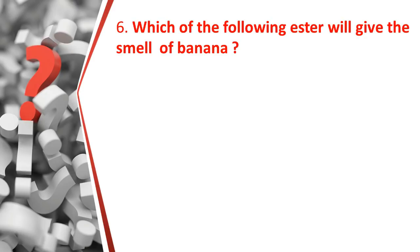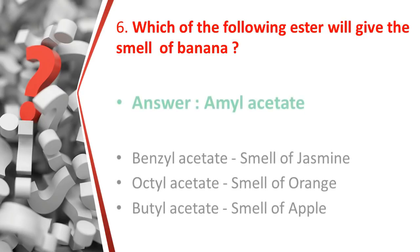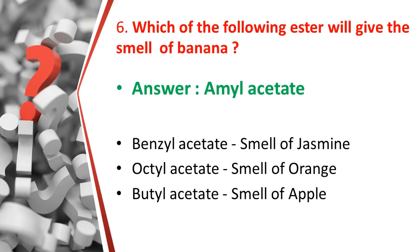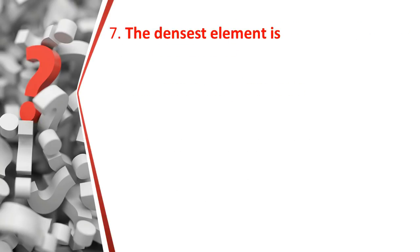The sixth question: which of the following esters will give the smell of banana? An ester is a carbon compound formed from a carboxylic acid. The answer is amyl acetate. Related facts: benzyl acetate has the smell of jasmine, octyl acetate has the smell of orange, and butyl acetate has the smell of apple. So the ester giving the smell of banana is amyl acetate.